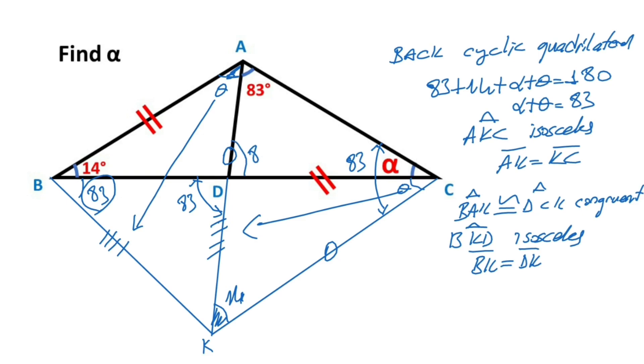So this angle is also 83 degrees. Notice that for this triangle, we know that sum of the interior angles equals 180 degrees. That means alpha equal 14 degrees. This was the first method.